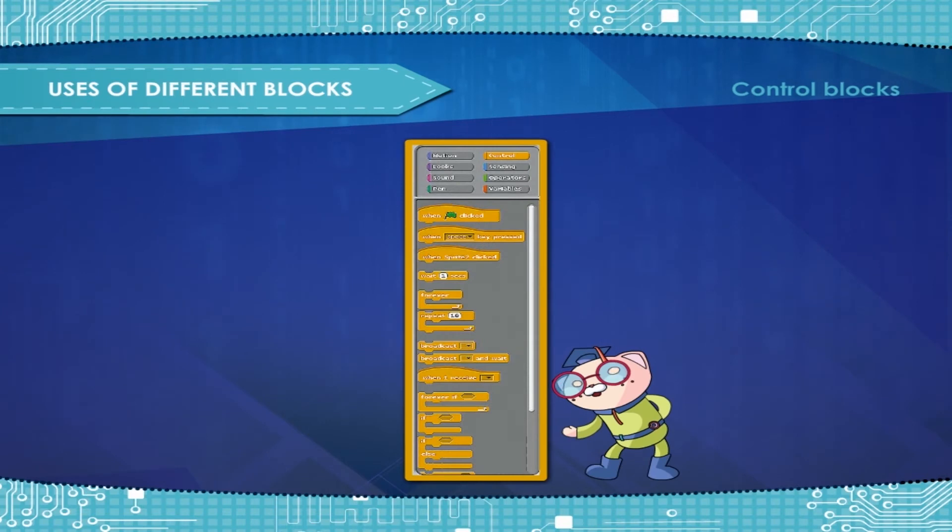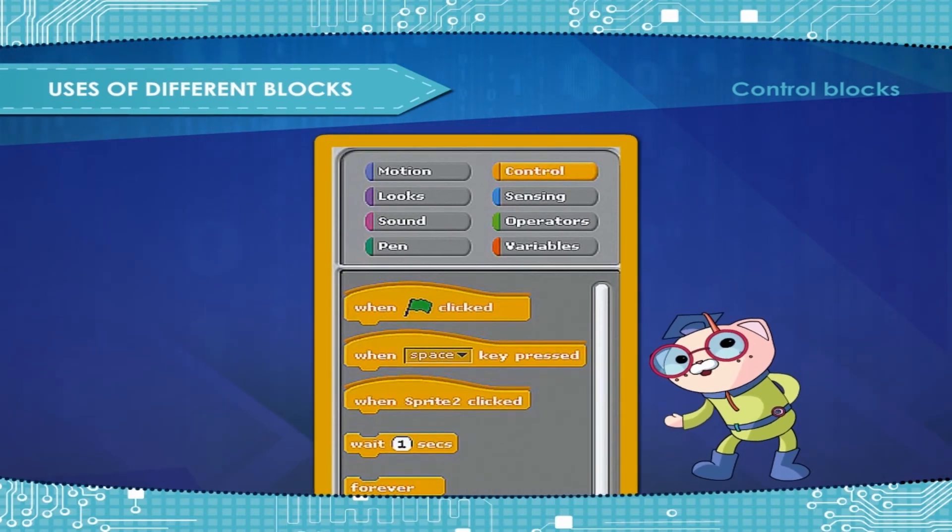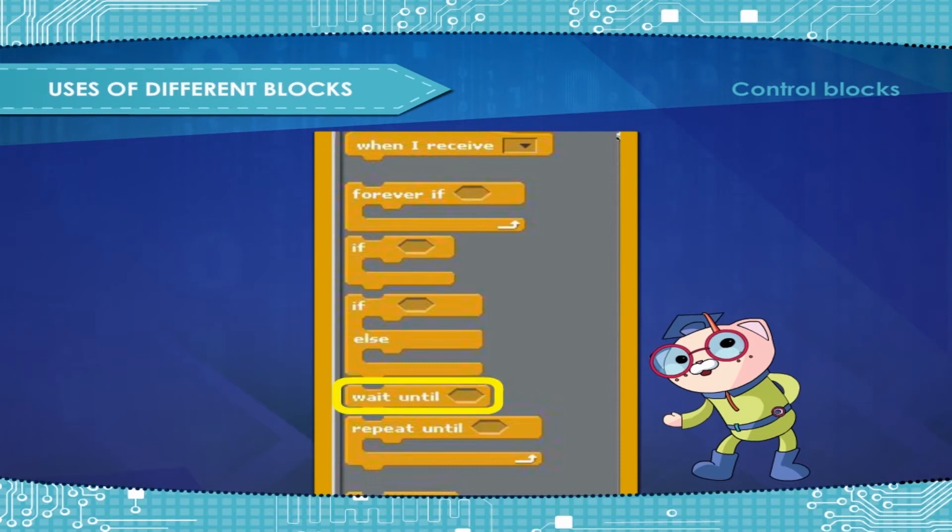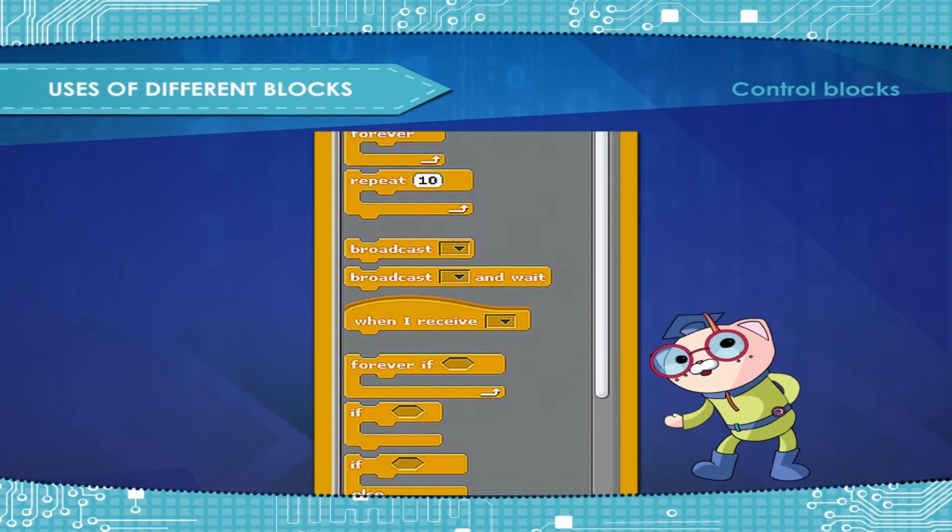Control blocks are the blocks that control sprites. Scratch has control stack blocks including wait and repeat, which is a loop that repeats the specified amount of times.